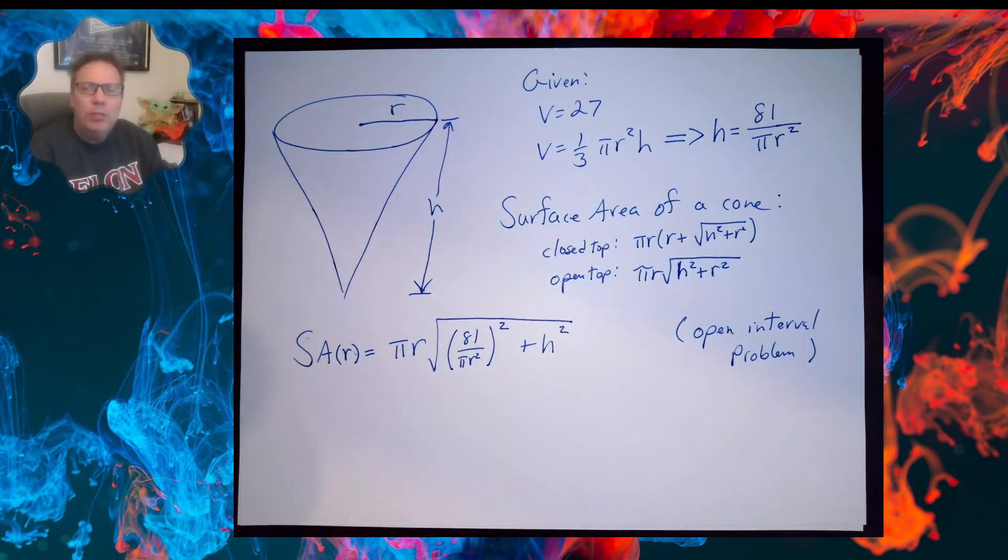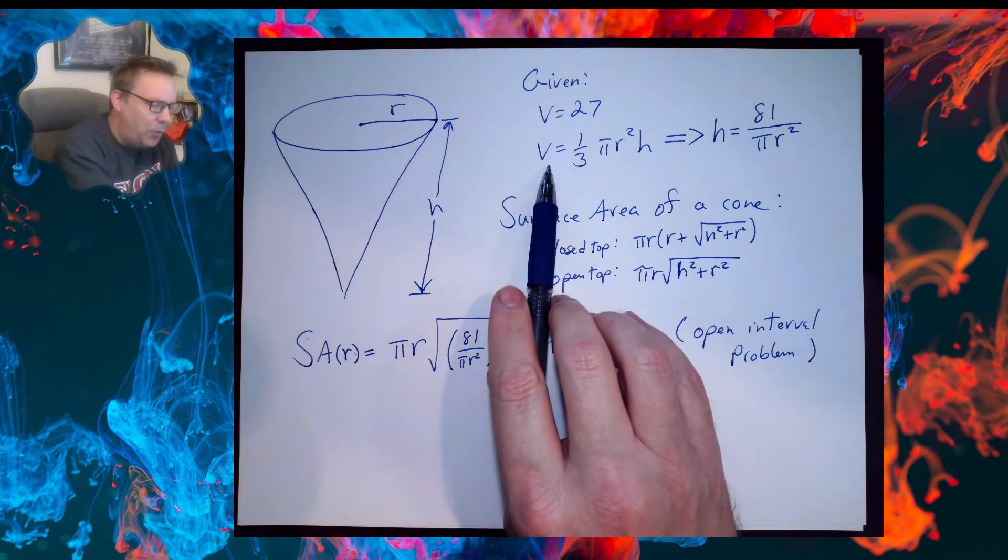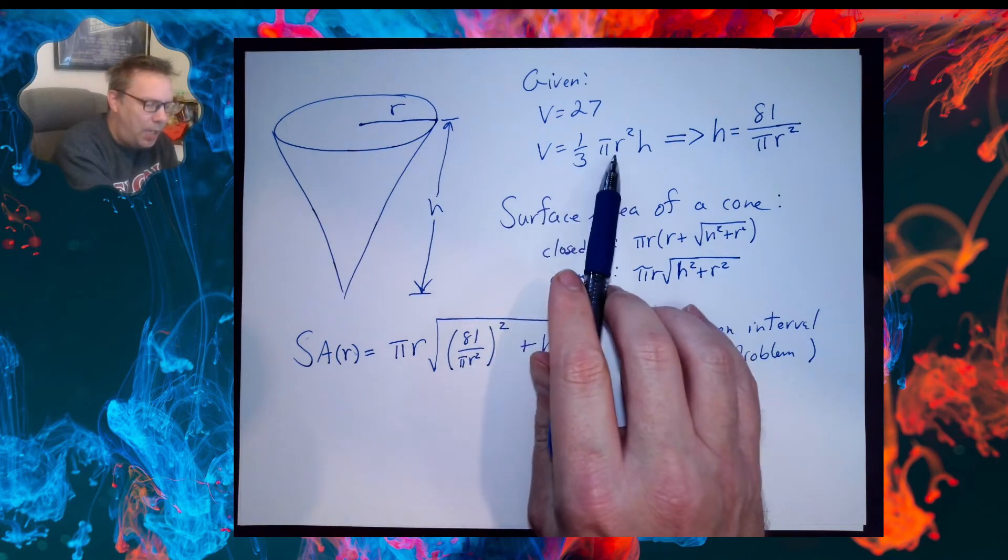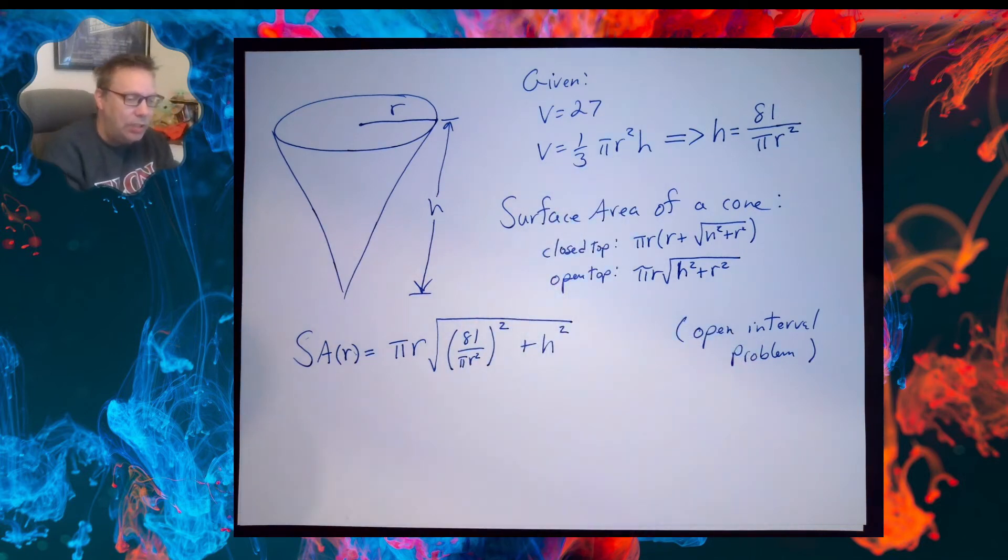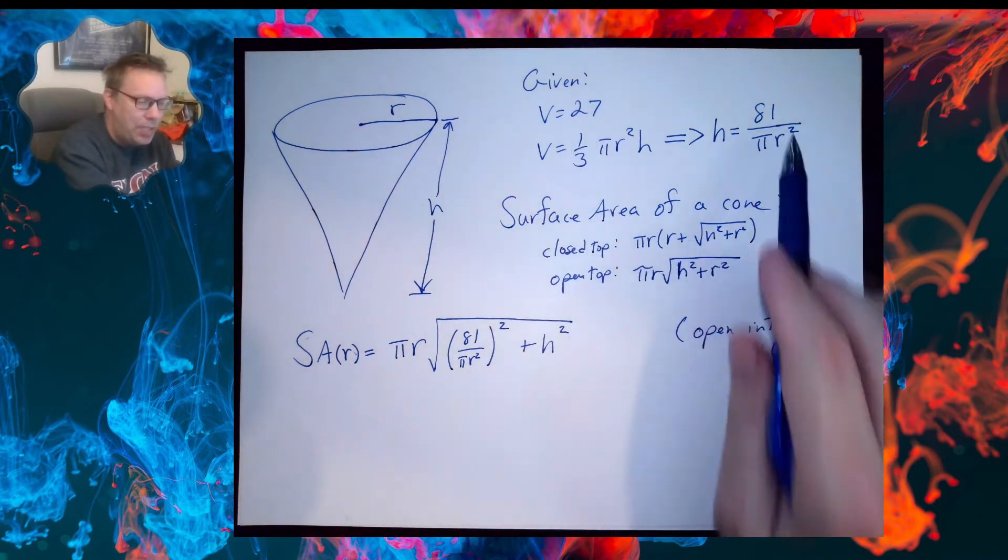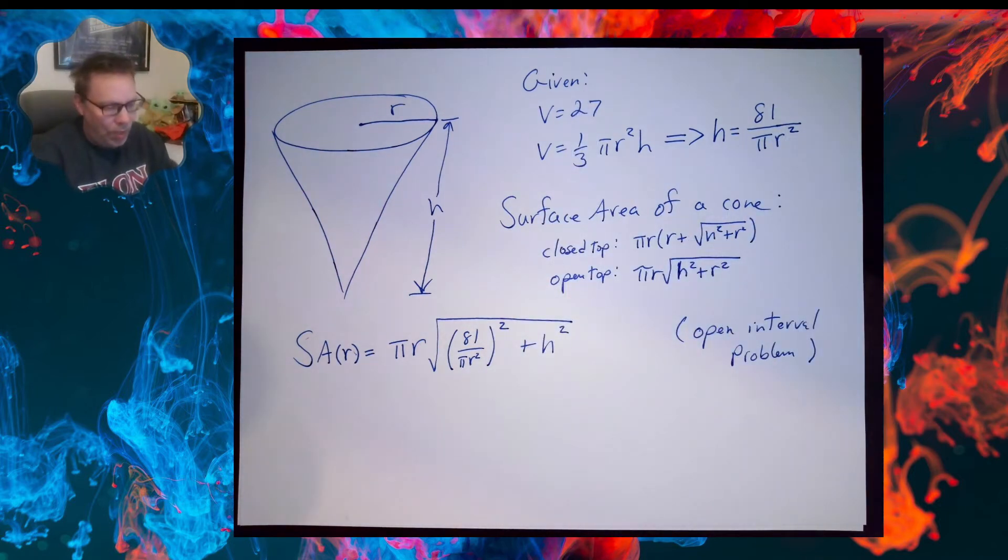Well I know the volume is 27 cubic centimeters, so I know that my volume formula one-third π r² h, if I combine this with the 27 - 27 times 3 is 81 - if I solve for h, I get 81 divided by π r cubed. That's what h is. I could also solve for r as well, but I'm choosing to solve for h in this problem. It is totally up to you.